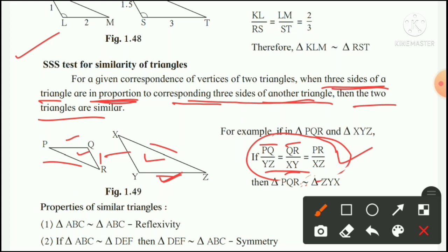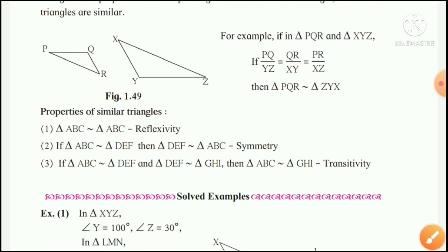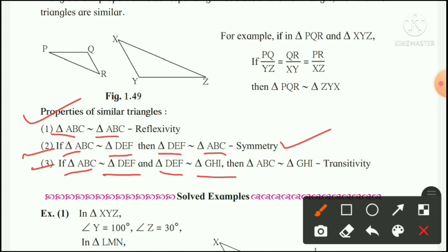We have covered three tests. Now, properties of similar triangles. The first property is reflexivity: triangle ABC is similar to triangle ABC — every triangle is similar to itself. The second property is symmetry: if triangle ABC is similar to triangle DEF, then triangle DEF is similar to triangle ABC. The third property is transitivity: if triangle ABC is similar to triangle DEF, and triangle DEF is similar to triangle GHI, then triangle ABC is similar to triangle GHI.